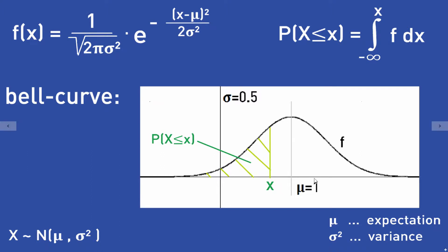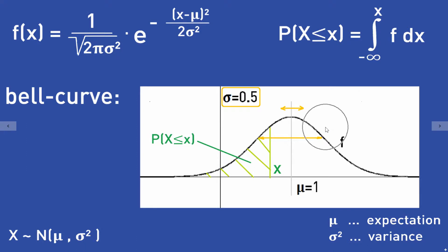The expectation mu describes where exactly the maximum of the bell curve is situated. If you make mu larger, the maximum of the bell curve would be more on the right; if you make it smaller, the maximum would be more on the left. The variance sigma describes how wide the bell curve is — if you make sigma larger, the curve becomes wider. The curve f is also symmetric around mu.